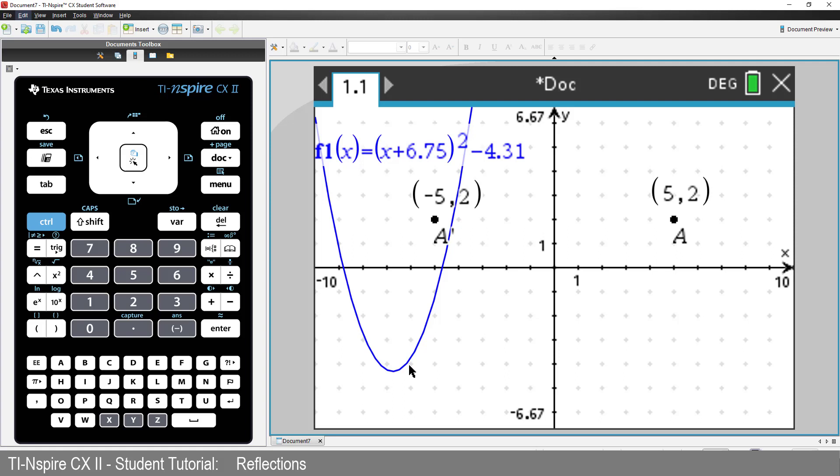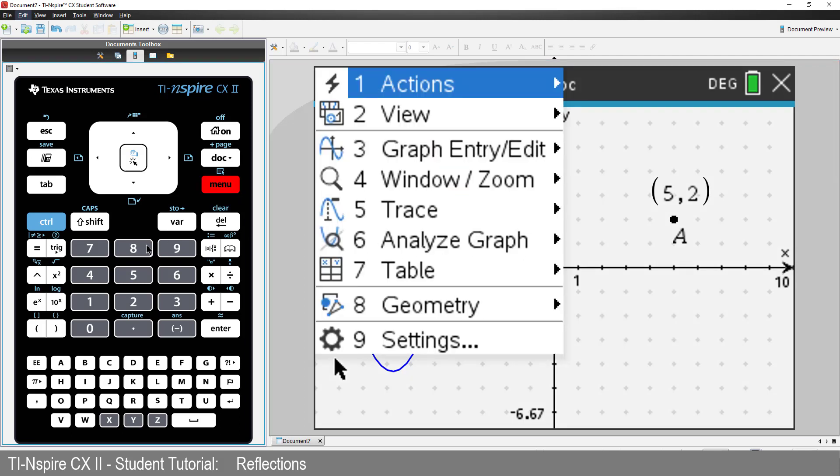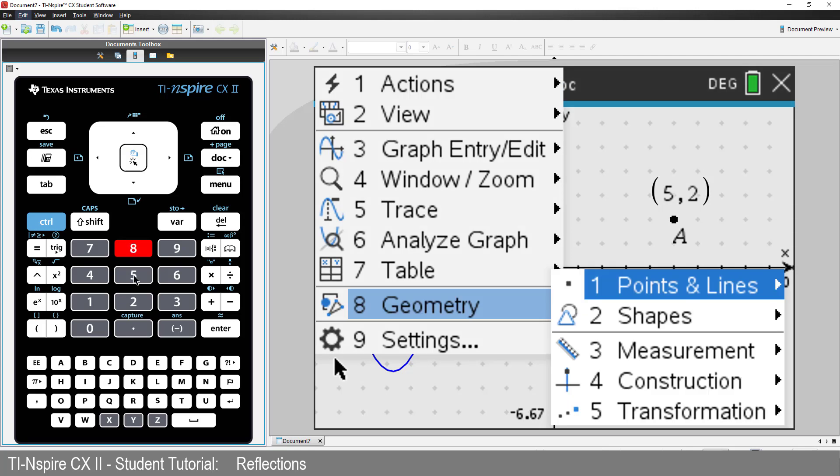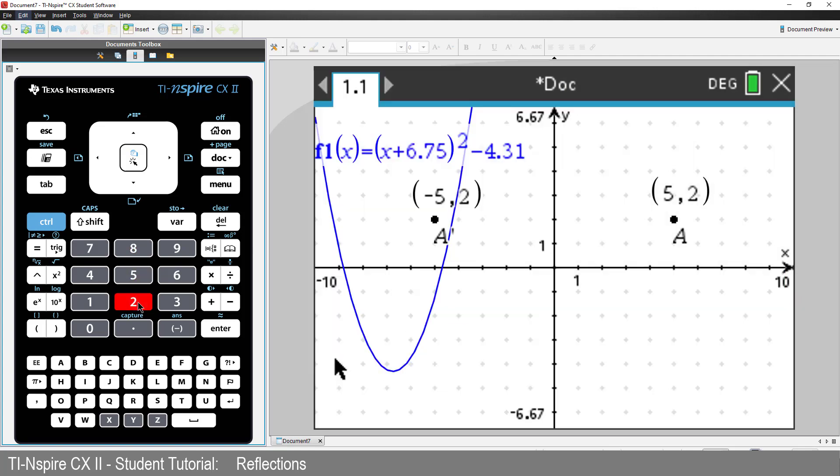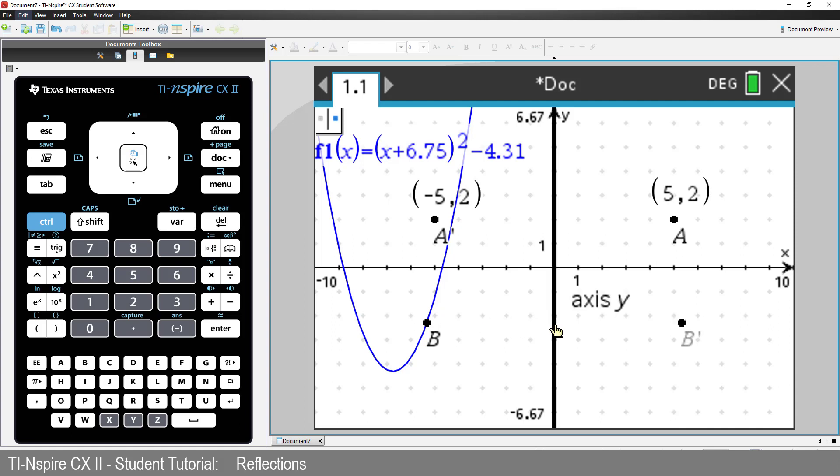Let's see what happens if we reflect a point on the parabola in the y-axis. From the menu, select Geometry, followed by Transformation and select Reflection. Point to the function and click. Point B is now on the function. Navigate across to the y-axis and click. Then press Escape to release the reflection tool.